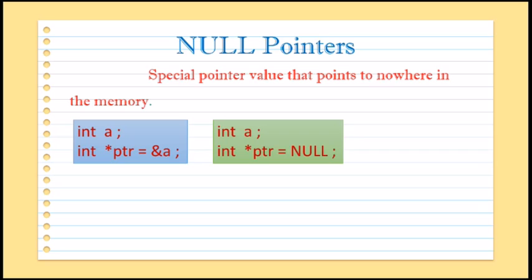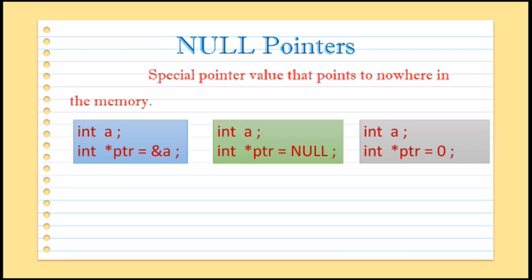Initializing a pointer variable with NULL value means it basically holds the value 0. The same example can be written in a different way also. Here, first we declare one integer variable that is a, and in the next line we declare one pointer variable and initialize it with the value 0. So in this way also we can initialize a pointer variable as a null pointer. We can initialize a null pointer either by using the word NULL or by the value 0.